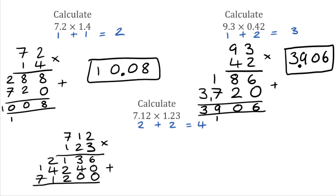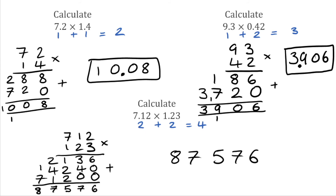Adding everything together: 6 add 0 add 0 is 6, 3 add 4 add 0 is 7, 1 add 2 add 2 is 5, 2 add 4 add 1 is 7, and then 1 add 7 is 8. So our answer to this calculation is 87,576. Going back to the original question, we need four decimal places, so the answer is 8.7576.